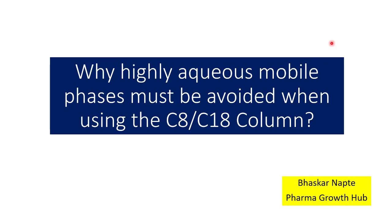In reverse phase chromatography, our stationary phase is non-polar and our mobile phase is polar. To make the mobile phase polar, we add an aqueous component like water. However, there is a limitation on adding water to the mobile phase. You cannot run reverse phase chromatography with very high water content — for example 90%, 95%, or even 100% — without resolving certain challenges first.